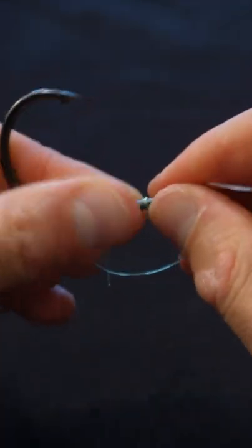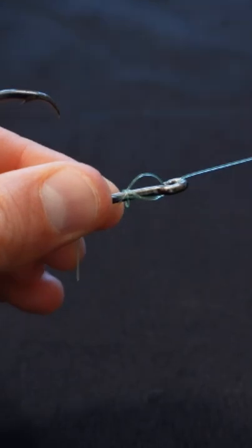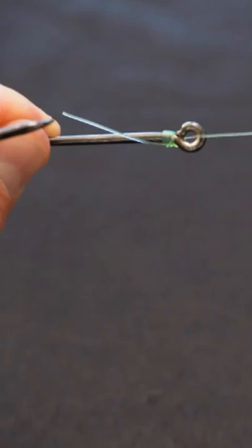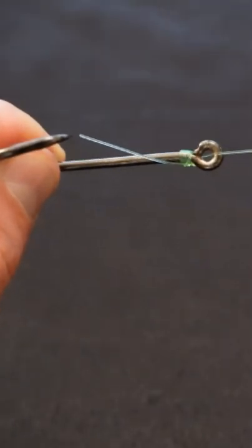So now you pinch the wraps and you're going to pull the other end which is going to secure the knot. Just like that, that is the uni knot.